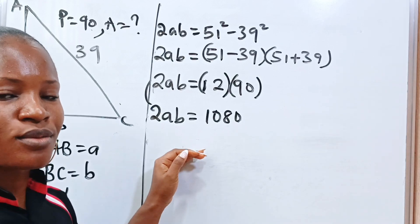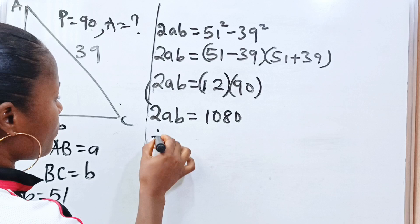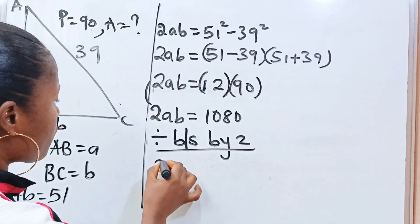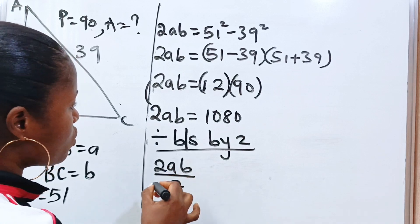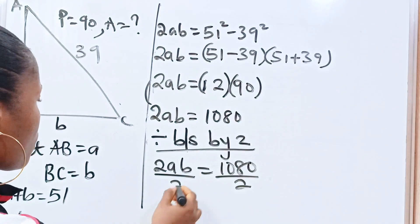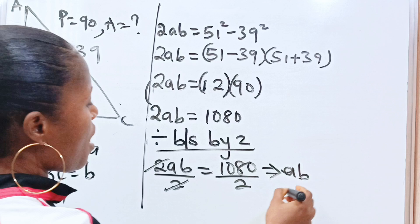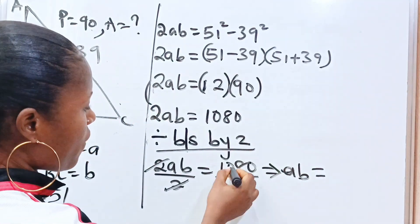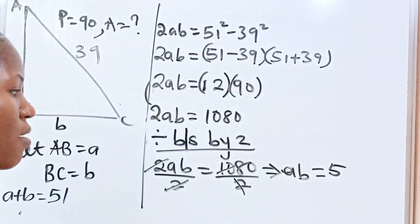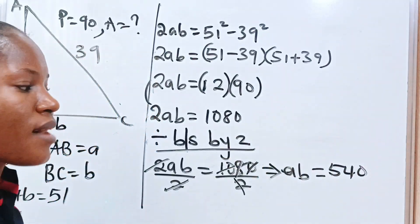So we divide both sides by 2. We are there already, trust me. We have 2AB divided by 2 is equal to 1080 divided by 2. This is equal to AB. This implies that AB is equal to, when 2 divides 10, we have 5. When 2 divides 10, we have 5. 8 divided by 2 is 4. And 0 divided by 2 is 0. So AB is 540.